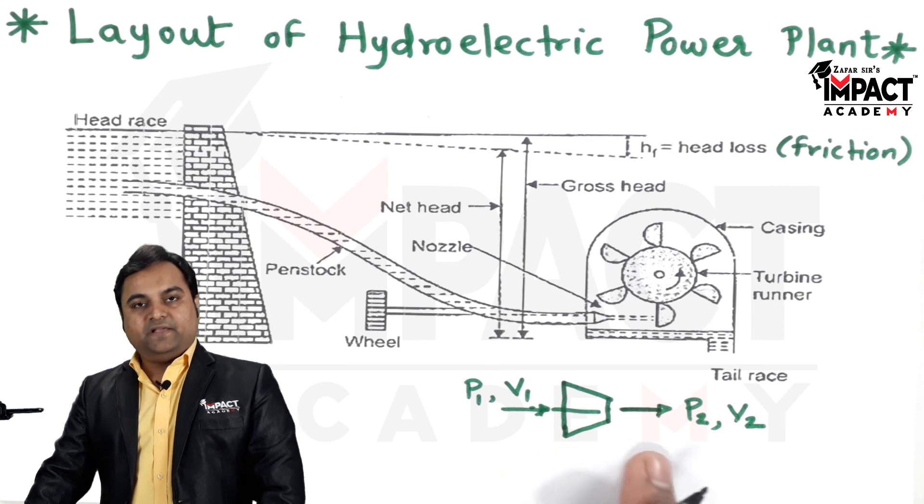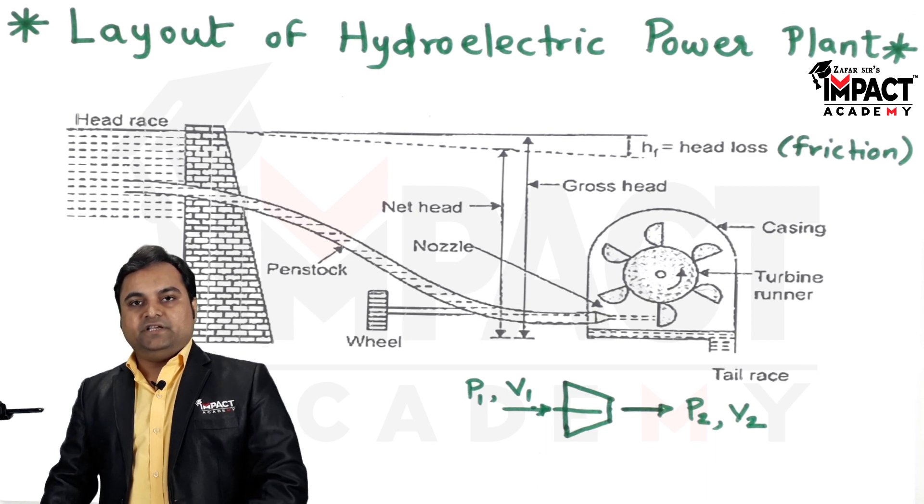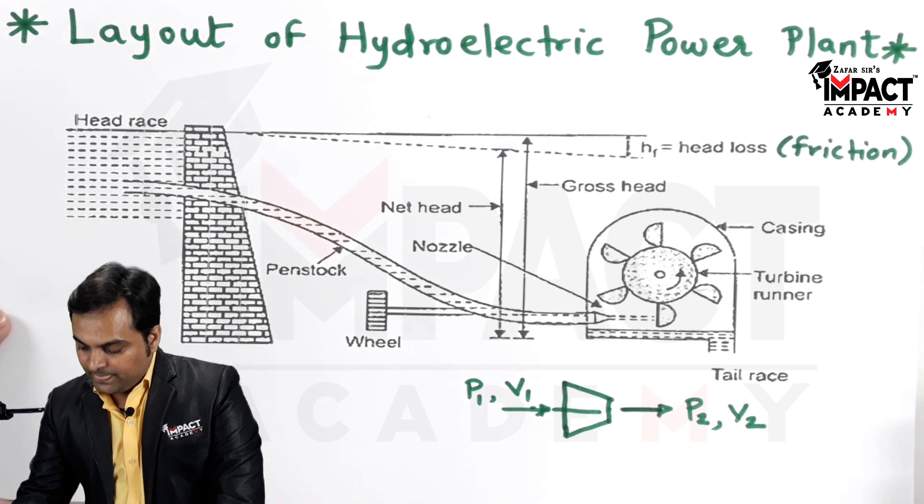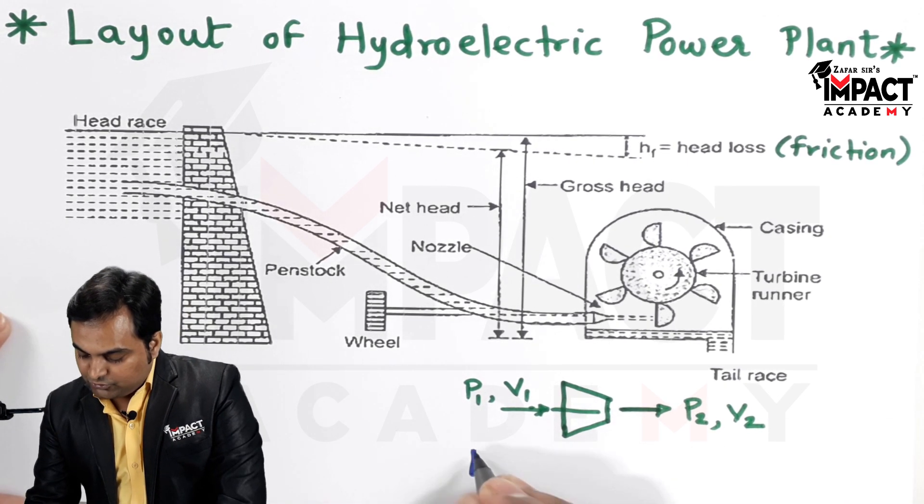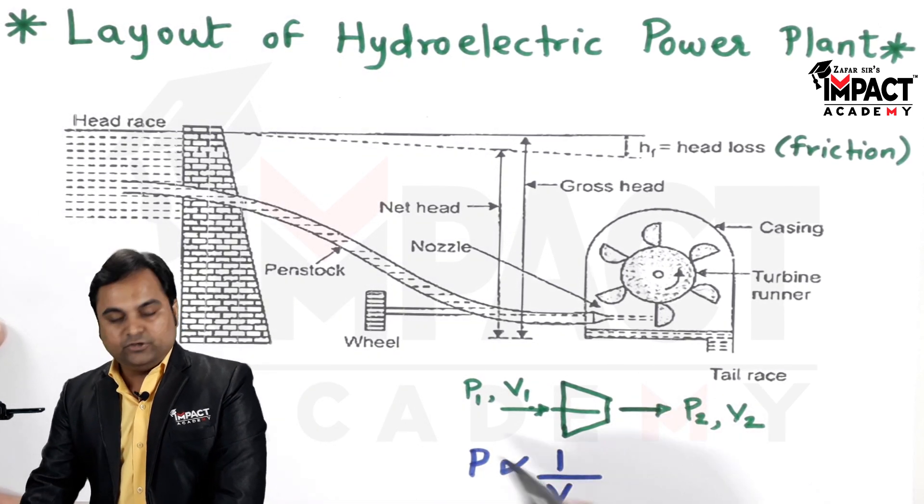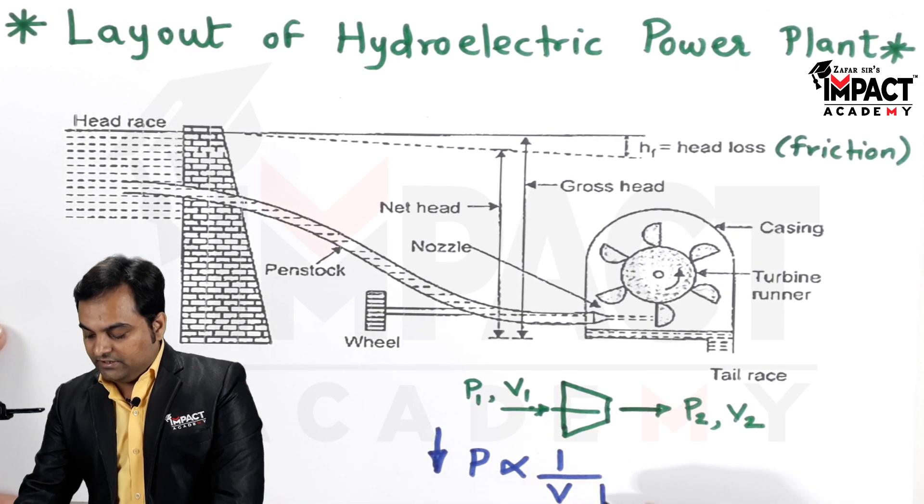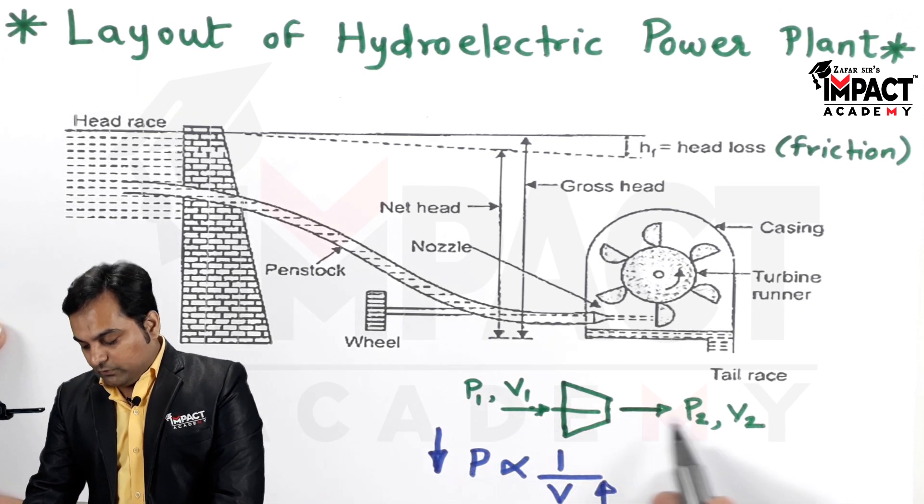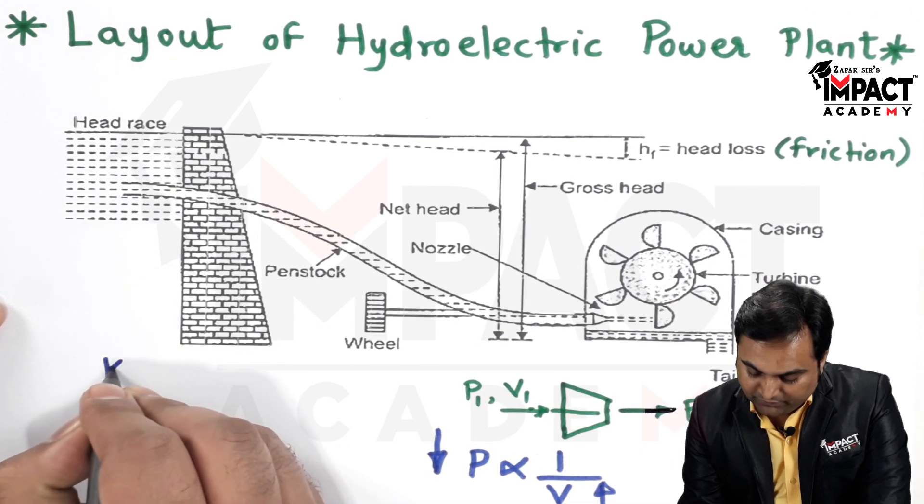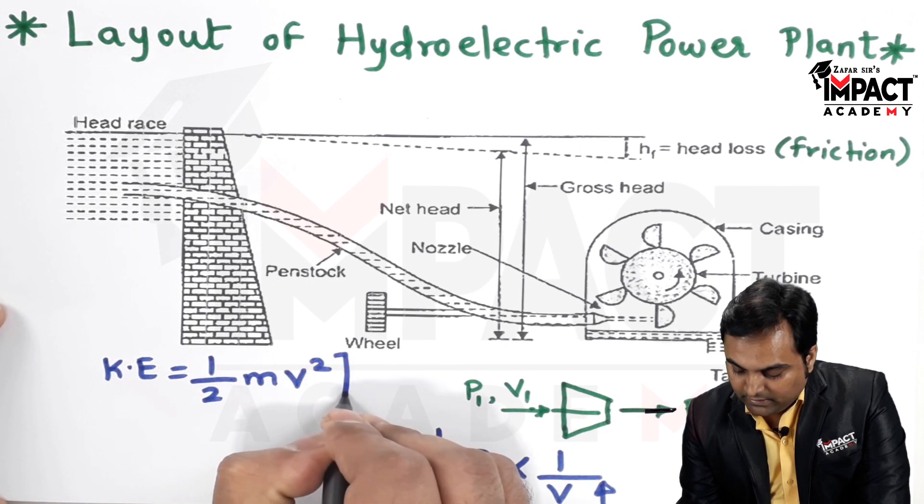So nozzle is that passage of varying cross section in which the pressure goes on decreasing and the velocity goes on increasing, because the relation between pressure and velocity are inversely proportional to each other. So inside the nozzle there is drop in pressure, and if there is drop in pressure there is increase in the velocity of the liquid which is passing through this nozzle. When the velocity increases, the kinetic energy increases because it is given by the kinetic energy is half mv square.